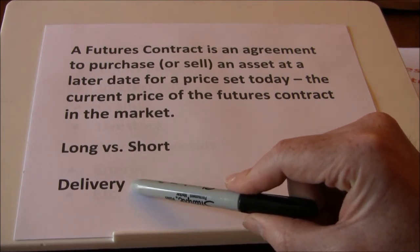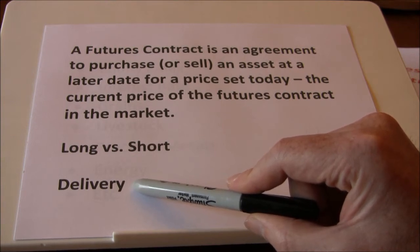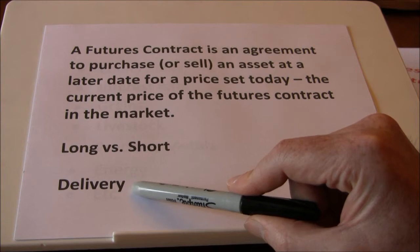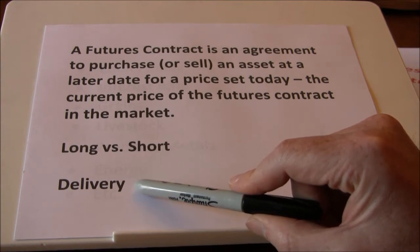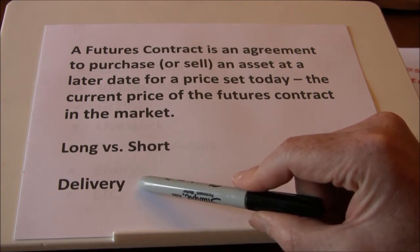Some contracts are set up for delivery. If you don't want to deliver the underlying asset or you don't want to take delivery, then you need to reverse your position — close out your position prior to expiration. Other contracts are set up so that there is no delivery.